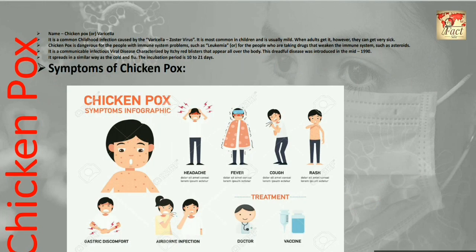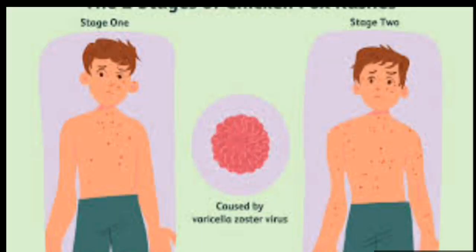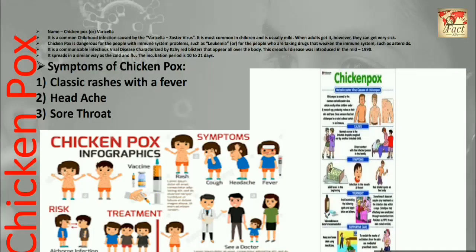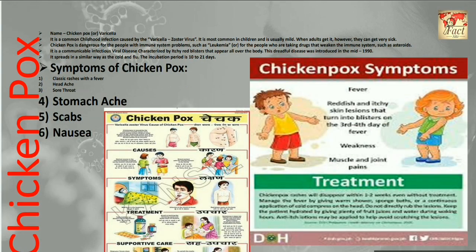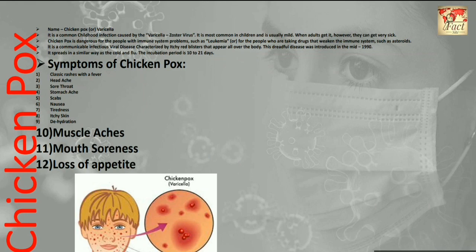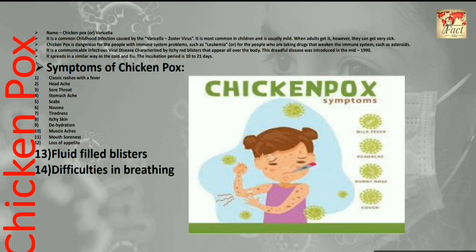Chickenpox often starts without the classic rash, with a fever of 101 to 102 degrees Fahrenheit. The symptoms include: classic rashes with fever, headache, sore throat, stomachache, nausea, tiredness, itchy skin, dehydration, muscle aches, mouth soreness, loss of appetite, fluid-filled blisters, and difficulties in breathing.